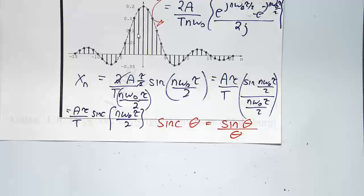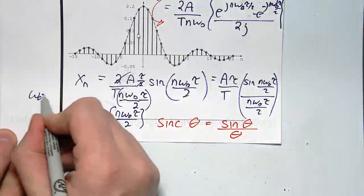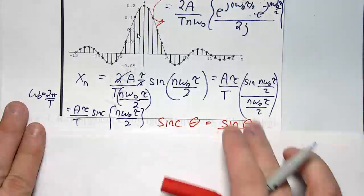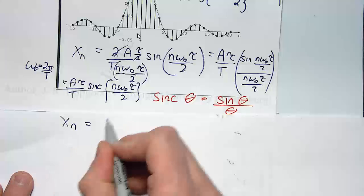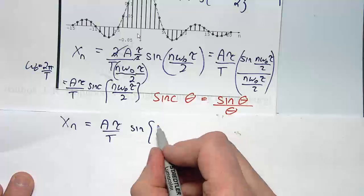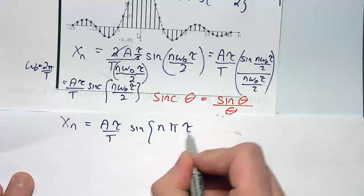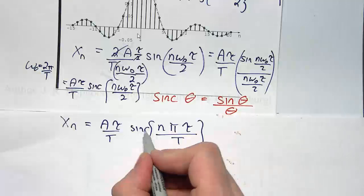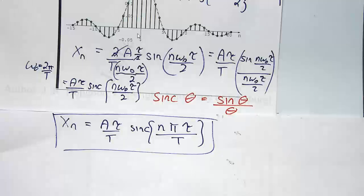So obviously this function here becomes A tau over T sinc of n omega 0 tau over 2. Maybe just one final step before I move on. I notice that I've got a tau, a T, and I've still got omega 0 in there. Can anyone give me an expression for omega 0? Yeah. So omega 0 is 2 pi over capital T. So I think I'll just replace that in there as well. So I think the final expression we're going to look at is A tau over capital T sinc of n pi tau over T, where the T is cancelled when I've substituted by n. So that's the final, and that should have been sinc. That's the final expression we're going to sort of deal with. So yeah. What does this sinc function look like?